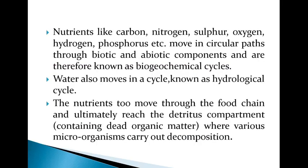Nutrients like carbon, nitrogen, sulfur, oxygen, hydrogen, and phosphorus — all these nutrients move in a circular path through biotic and abiotic components, and therefore they are known as biogeochemical cycles. Bio means life, geo means earth, and chemicals means nutrients moving a circular pathway from biotic to abiotic — from living to non-living, and again back to living in a circular pathway.